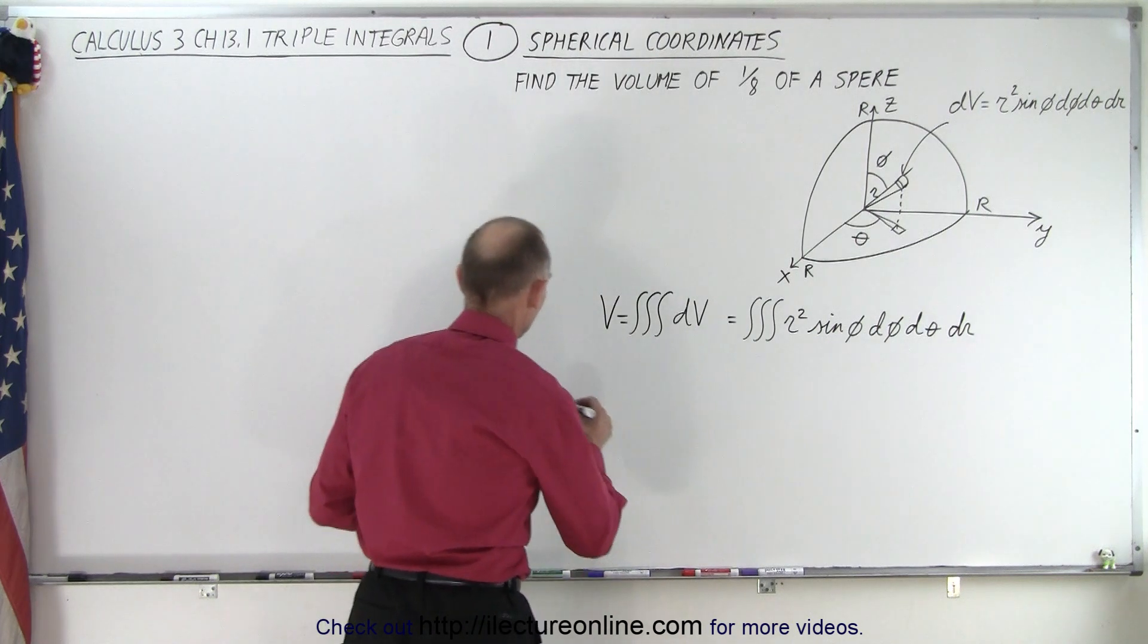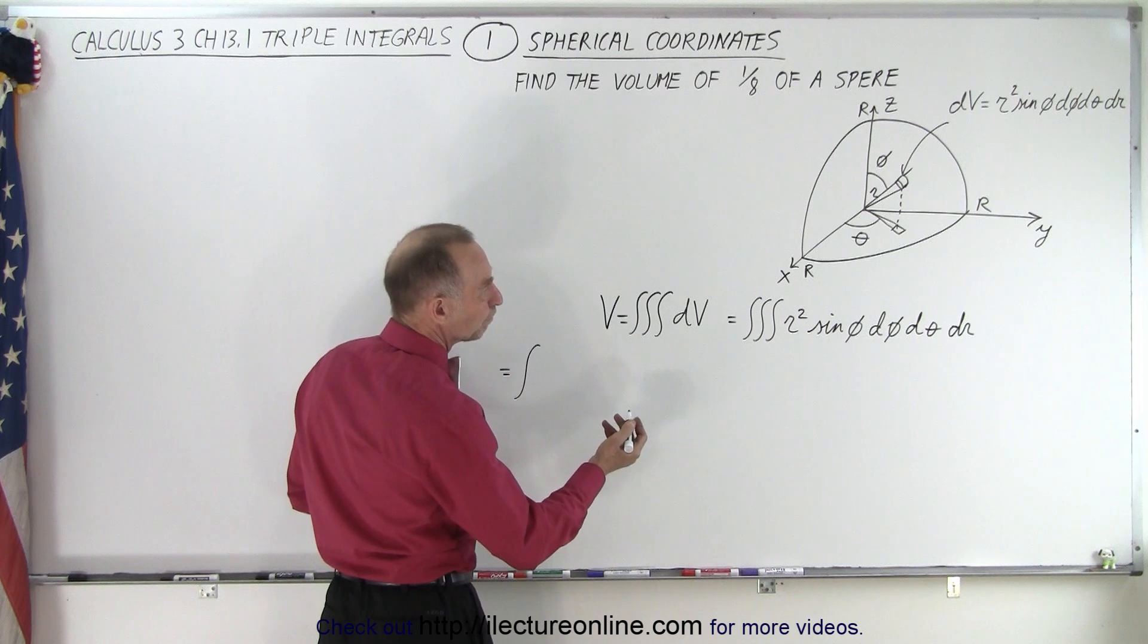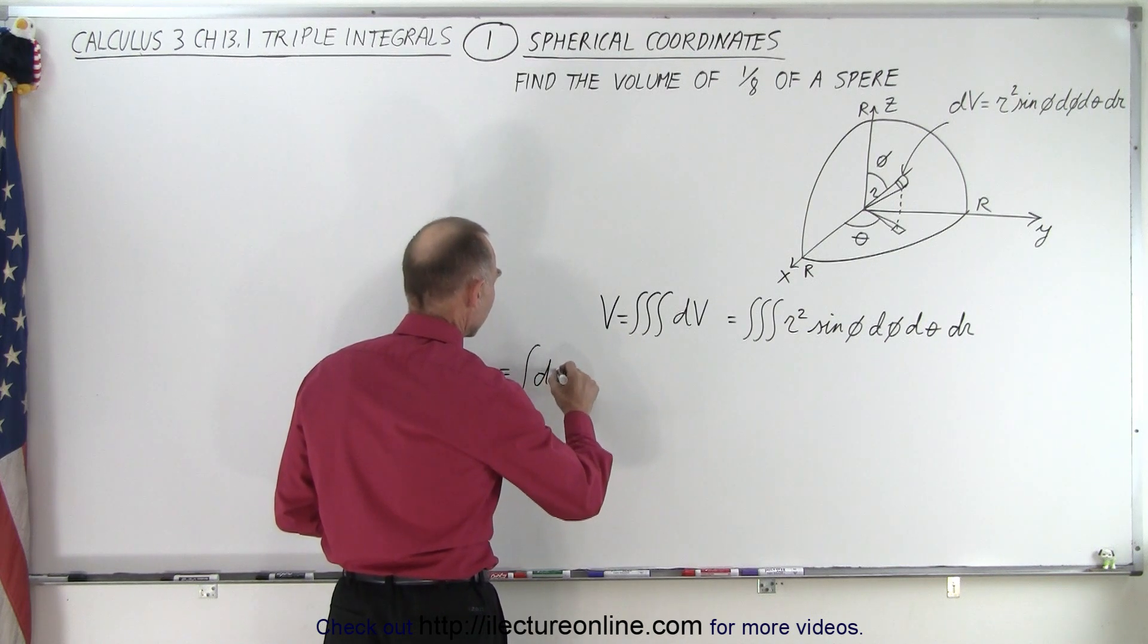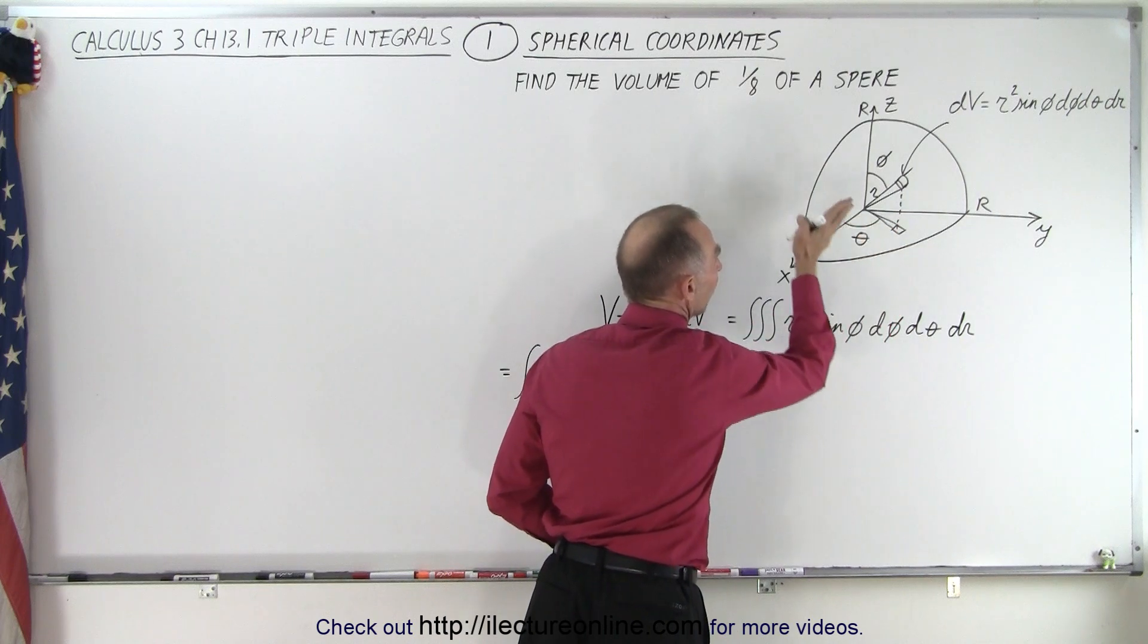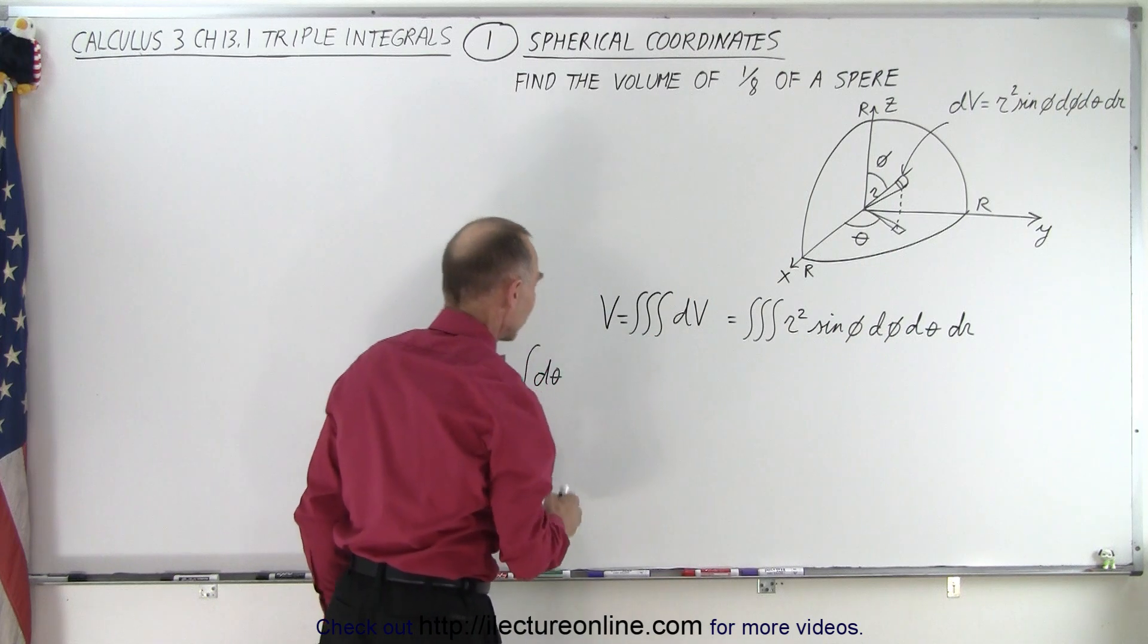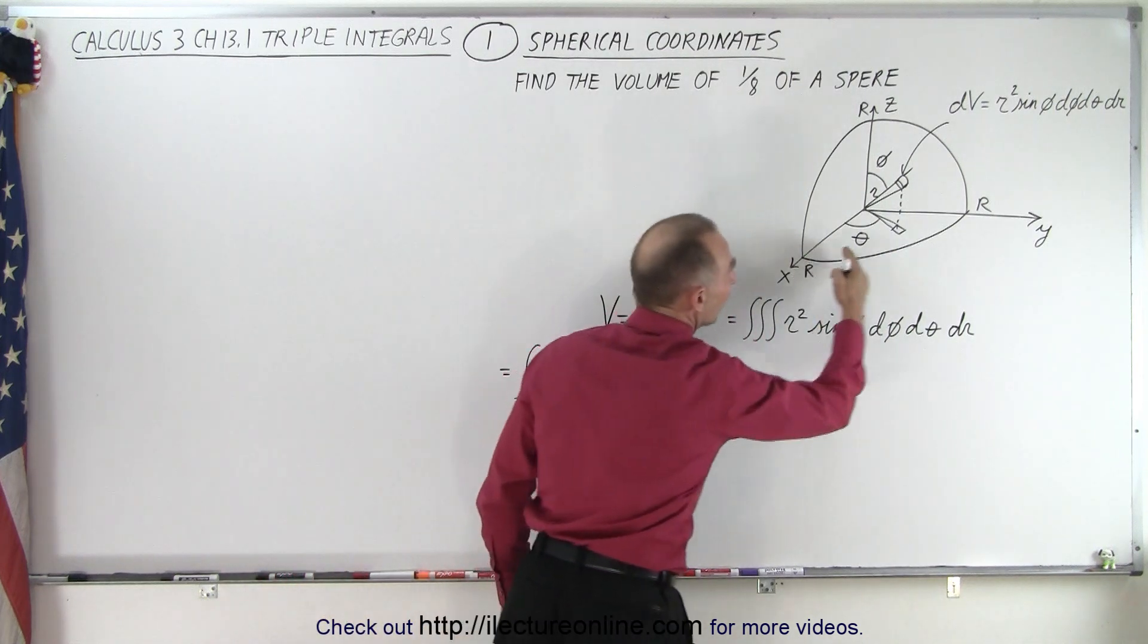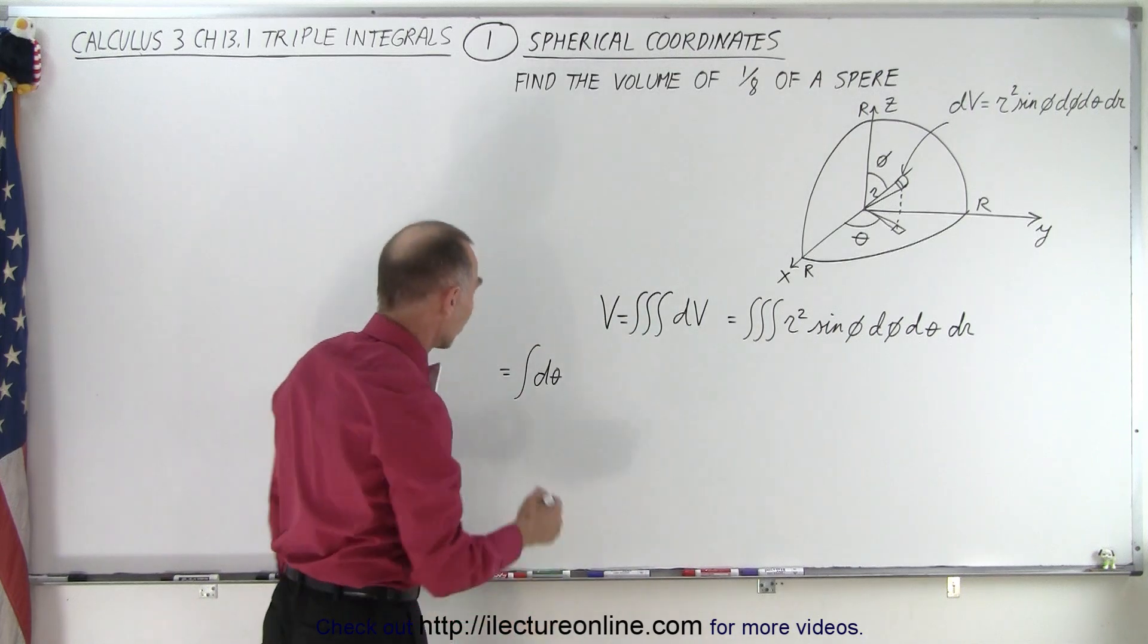So what we can do here is we can say this is going to be equal to the integral over d theta. Now d theta is the angle here in the xy-plane from the x-axis to where the projection goes down onto the xy-plane, and we need to integrate over a quarter circle, so that would be from 0 to pi over 2.